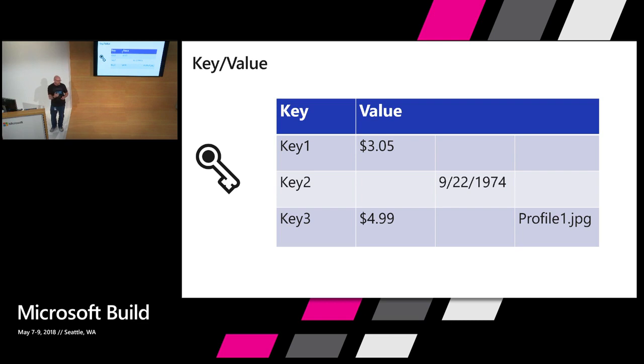Another example is something I run in production, which is a link shortening tool. I have the short link that maps to the long link — I look it up, redirect, and it happens quickly.